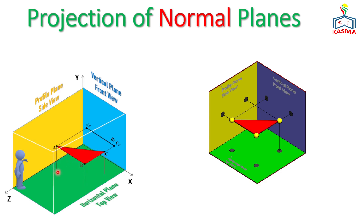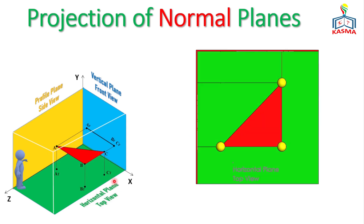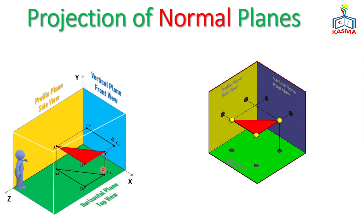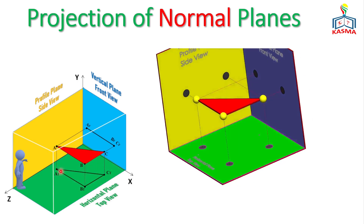For the top view, projecting downward, points A, B, and C are at the same height relative to the horizontal plane — the same distance in the Y-axis. Once projected, we get points labeled as A_T, B_T, and C_T for the top view, and A_F, B_F, C_F for the front view. 'T' means top view and 'R' means right side view. Connecting the three projected points gives us a triangular shape.